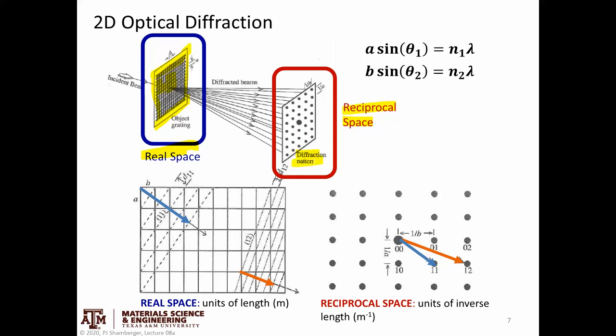However, the diffraction pattern itself occupies what we call reciprocal space. And that's just because, again, the distance between one diffraction spot and another is inversely proportional to their spacing in real space. So whereas in real space, we can think about the separation between planes and we can think about it in terms of units of length or meters, in reciprocal space, the separation between one diffraction spot and another are given in terms of inverse length units or inverse meters. Again, we're going to come back to reciprocal space later.